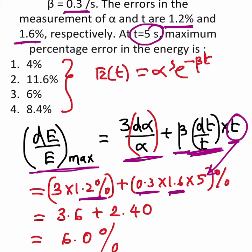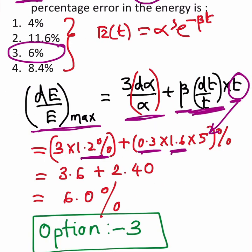Once you simplify, you will get 6 percent. Now here in option 3 there is 6 percent, so the correct option is 3.